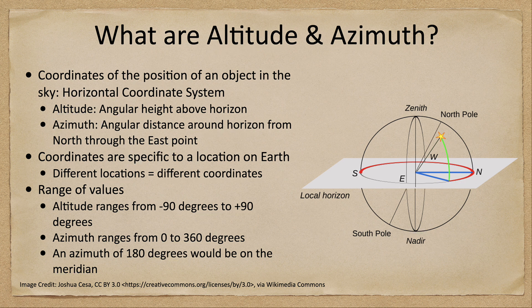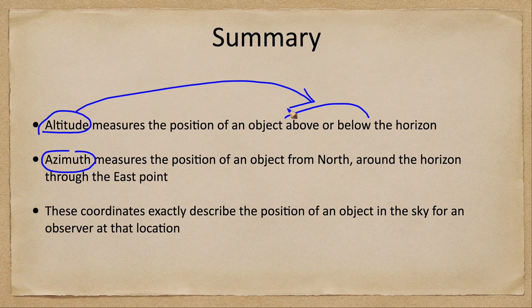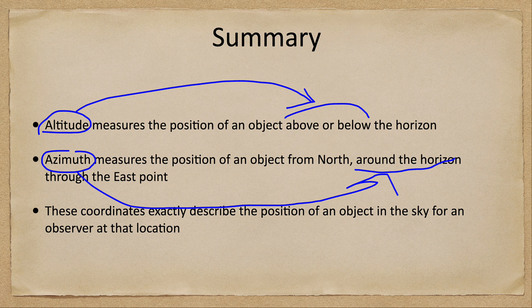To summarize: we looked at altitude and azimuth. The altitude measures the position of an object above or below the horizon — how far above or below the horizon you are. The azimuth measures the position around the horizon, going from north through the east point on the horizon. Together, these coordinates exactly describe the position of an object in the sky for someone observing at a given location and at a specific time.